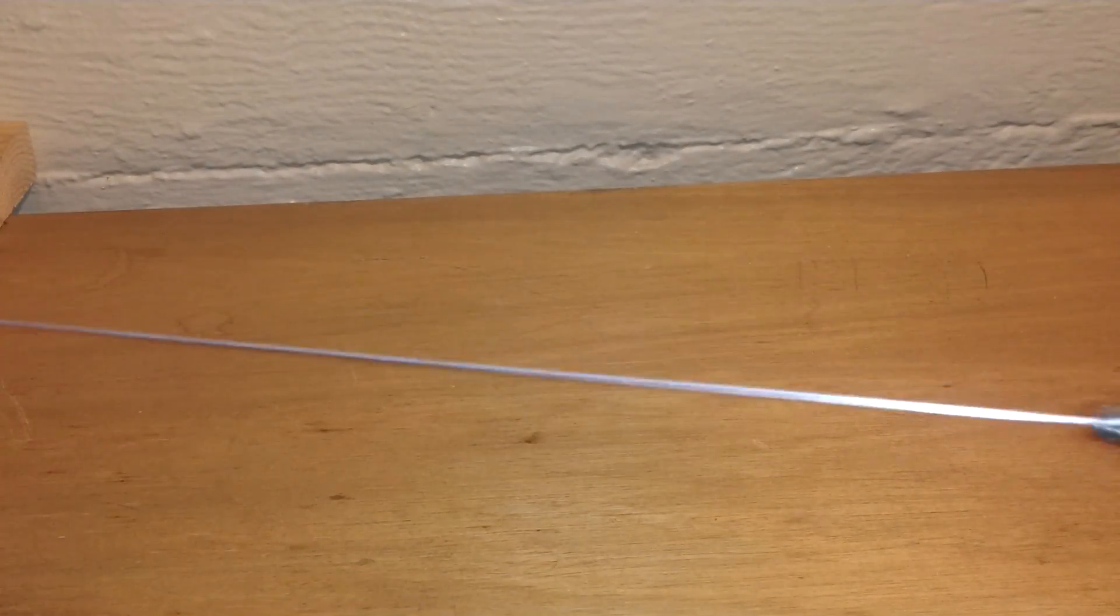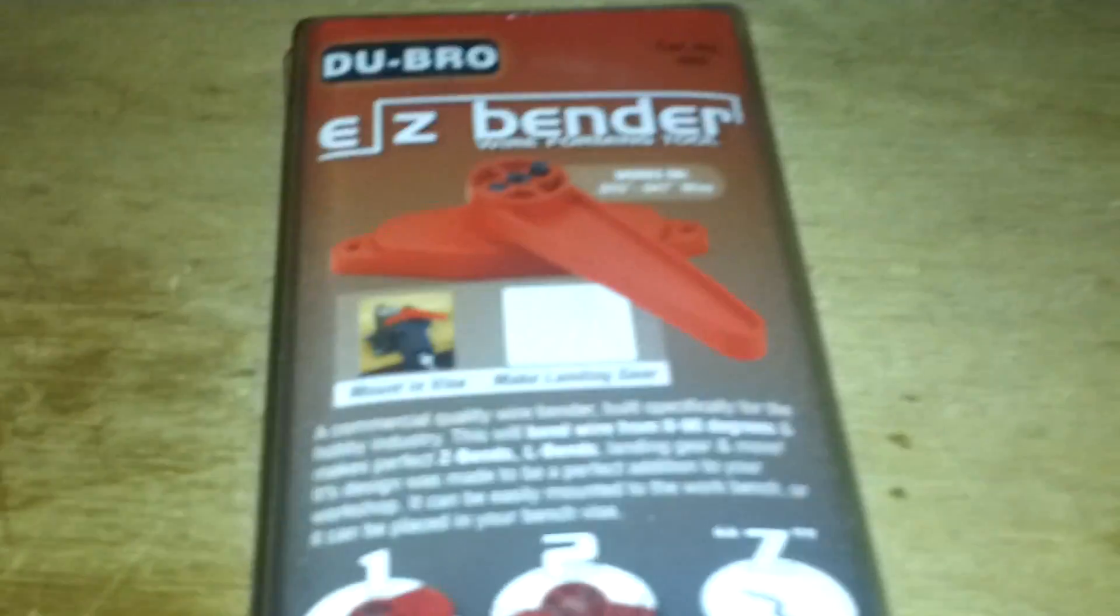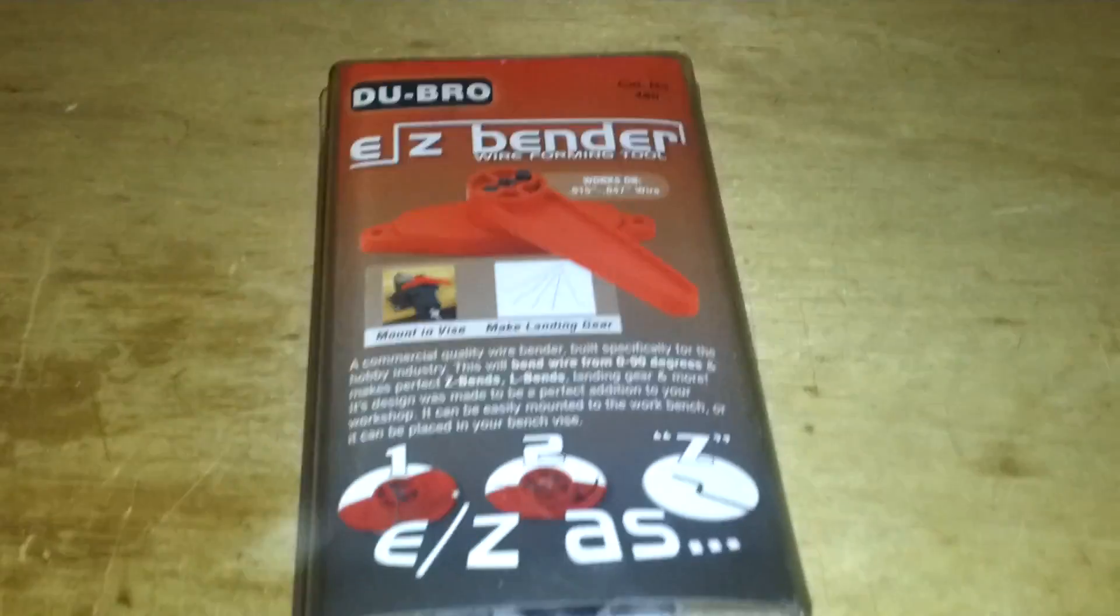About as straight as you can get it. You can use this as is. But if you need to put a Z bend into it, I would put the bend into the wire before you heat treated it.